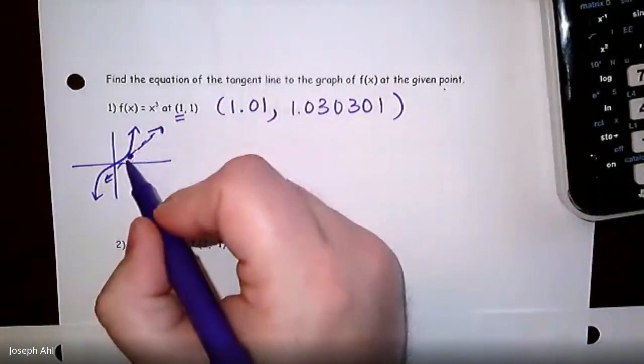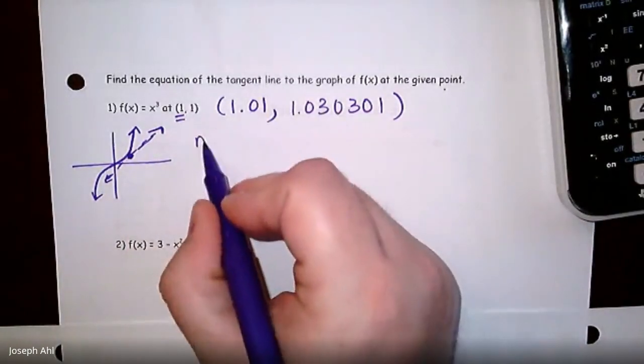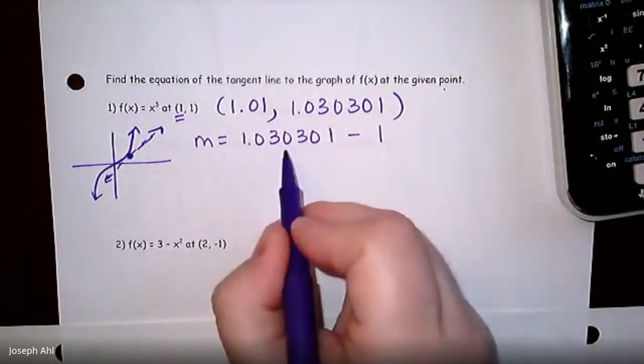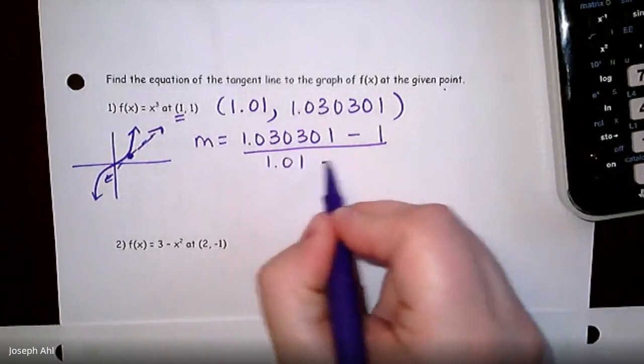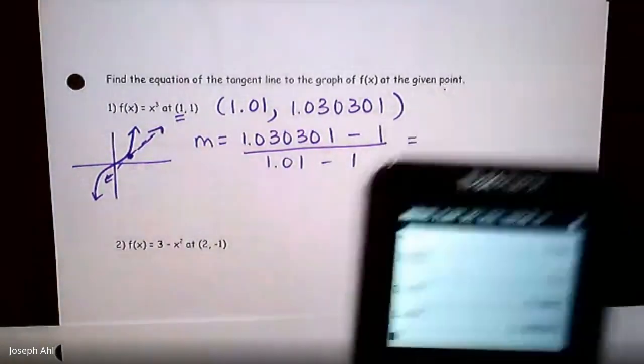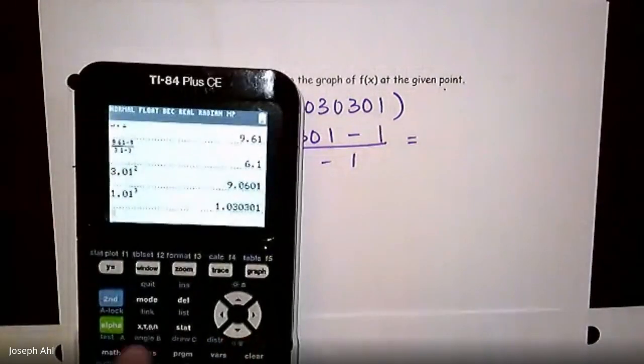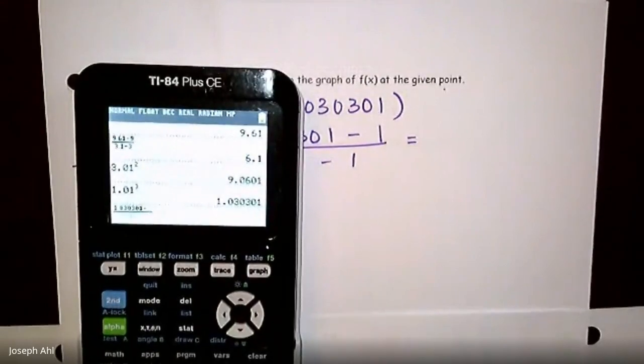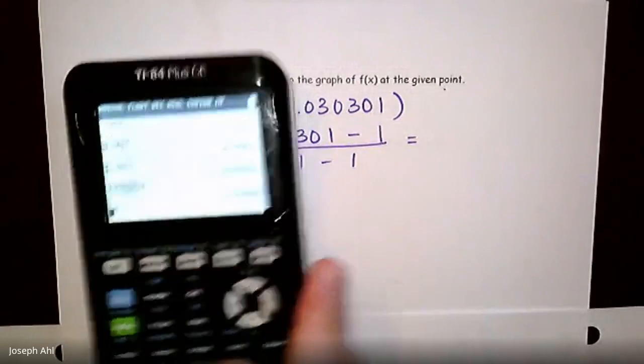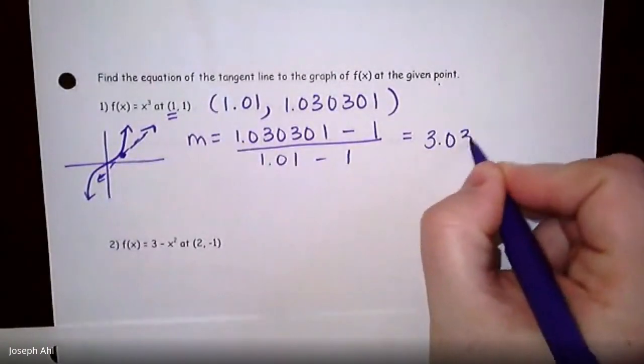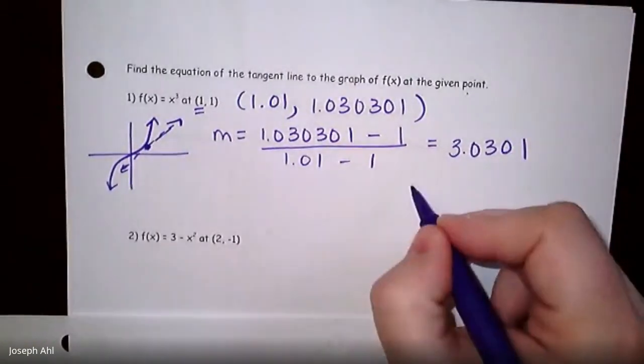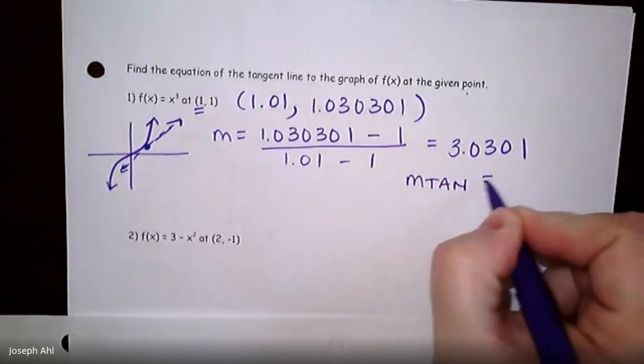So now that I have that coordinate that's super close to this point right here, we're going to find the slope between those. Over the change in the x values. Okay. So the slope of the secant line that's super close by is going to be 1.030301 minus 1 over 1.01 minus 1. I got that the slope is 3.0301. And since we're so close by to this point right here, I can say with a fair amount of confidence that the slope of the tangent line is going to have a slope of 3.